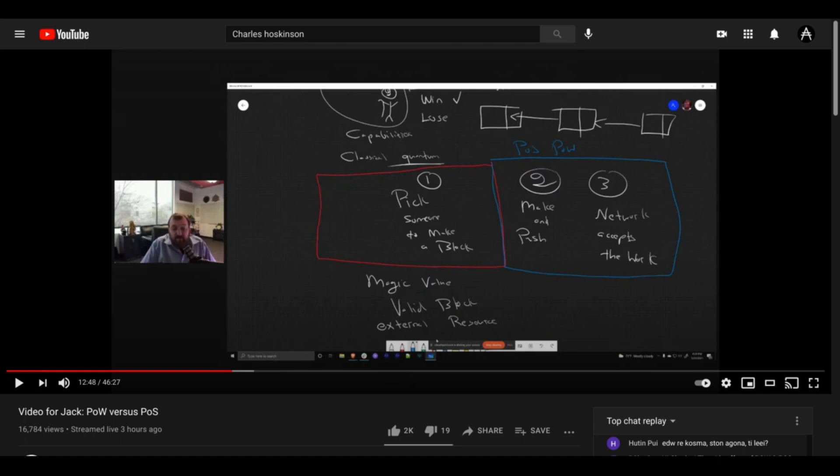Charles labels this as the difference between having external security, security via external resources, ASIC miners in warehouses that we call data centers, versus having internal security that you have in proof of stake. Proof of stake is not relying on anything that is external to it, like physical resources.